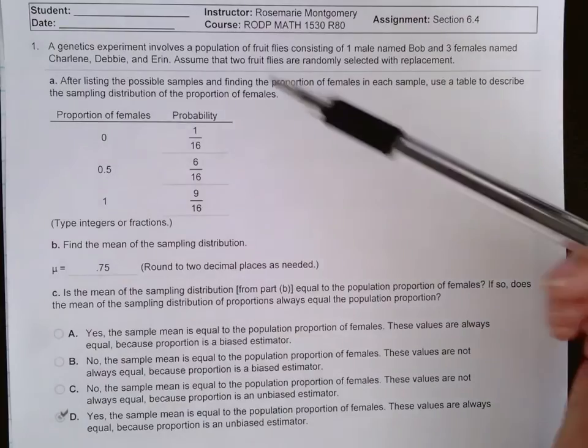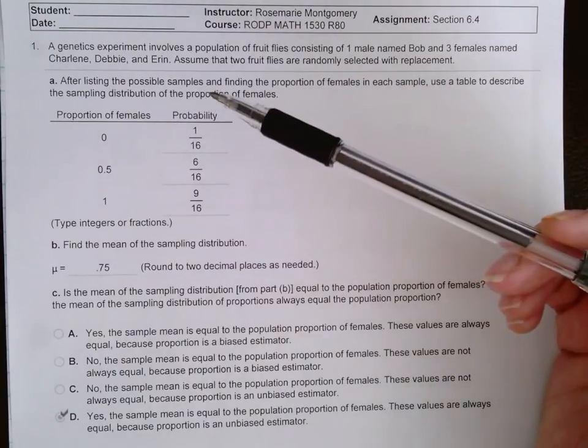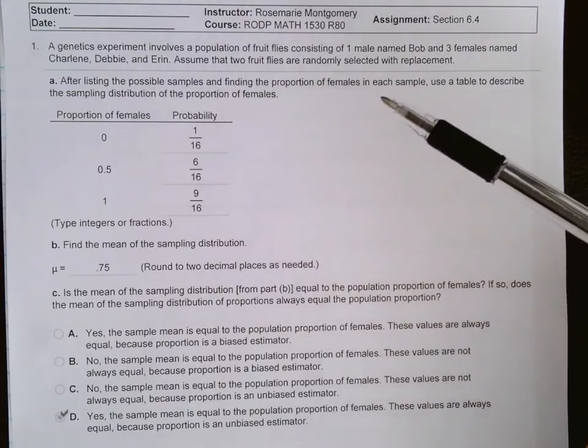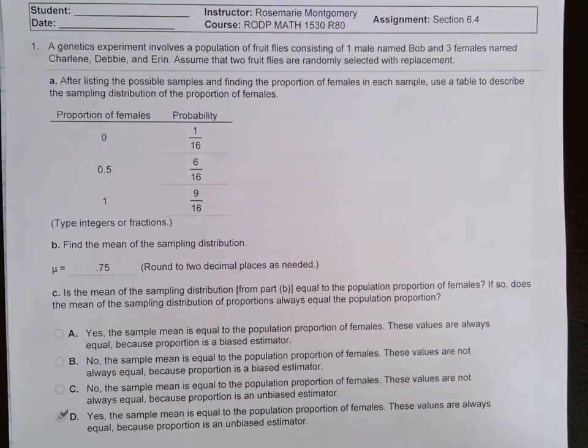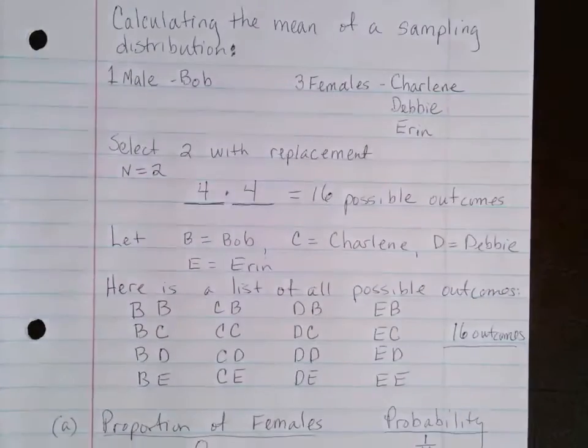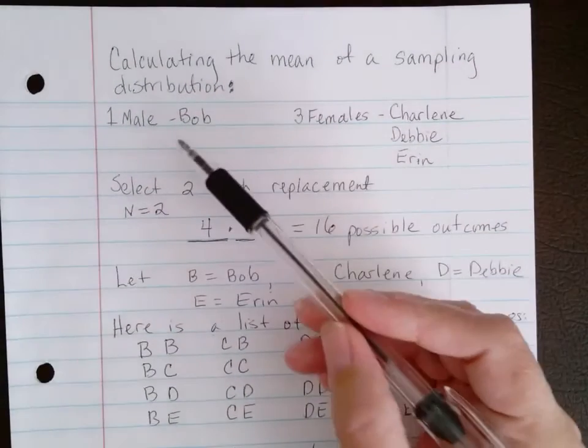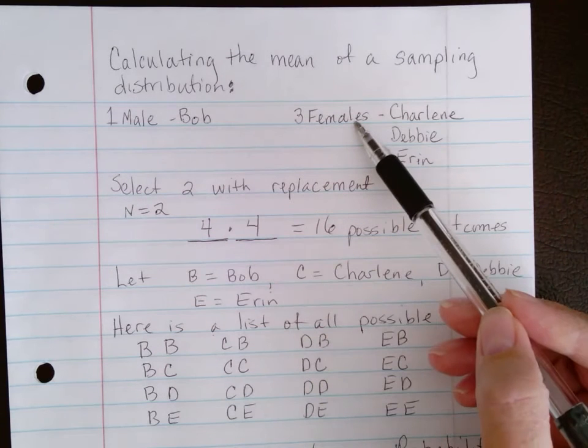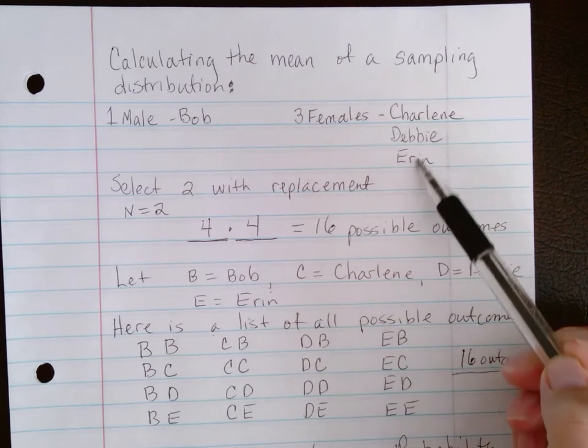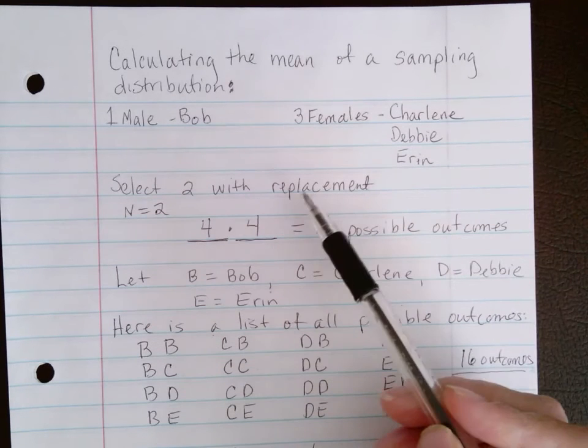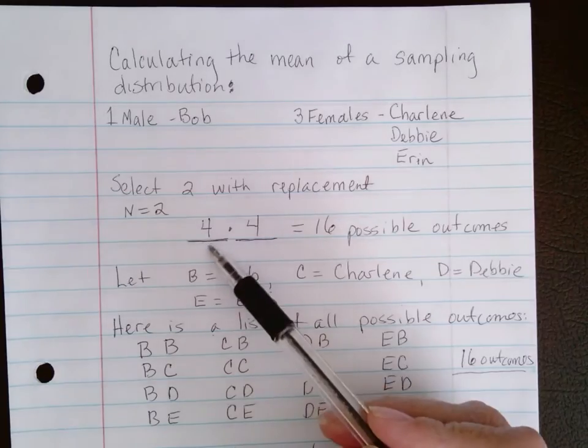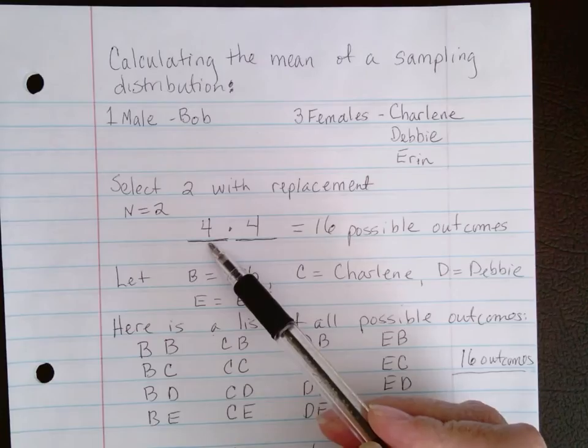We want to list all the possible samples and find the proportion of females in each sample. Let's look at how to do that. We were told we have one male, Bob, and three females: Charlene, Debbie, and Erin. We're selecting two with replacement, so n is two, and we need to figure out how many possible outcomes there are in this scenario.